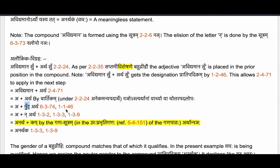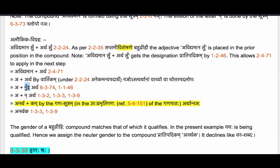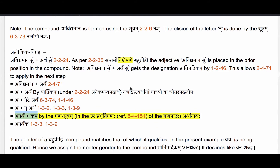As per the Paribhasha Sutram 1.1.46 Adyantav Takitav, the augment Nut joins at the beginning of the Uttarapadam Artha. The ending letter ta of the augment Nut is it by 1.3.3 Halantyam; the nasal letter u is it by 1.3.2 Upadeshe Janana Sika. Both take lopaha by 1.3.9 Tasya Lopaha. So now we have Anartha. At this point we can use the Ganasutram Arthan Nanyaha which is in the Urafprabhrithi Ganaha, referenced in Sutram 5.4.151.